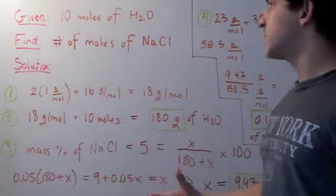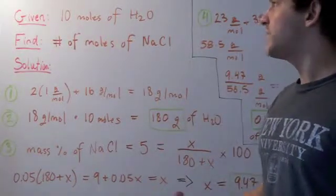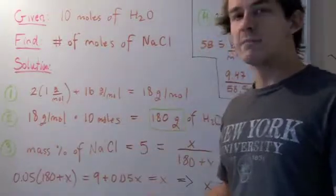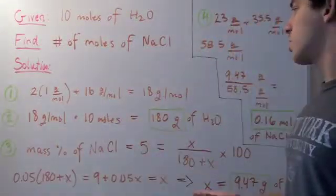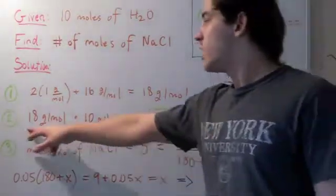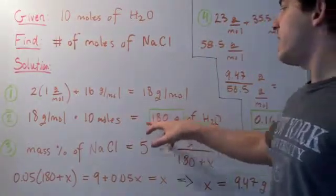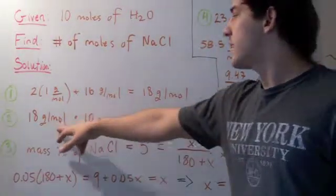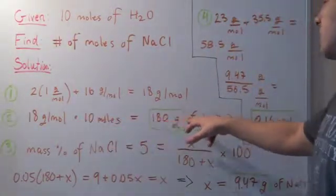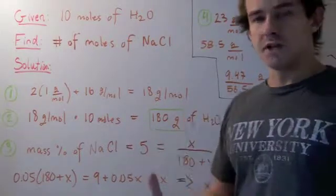Now we can use this molecular mass — we multiply that by 10 moles to get the amount in grams of water in our solution. So 18 times 10 gives us 180; the moles cancel, we're left with grams. So 180 grams of water in our beaker.